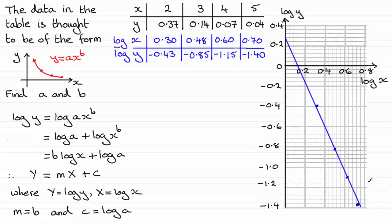And from this, we can get the intercept here with the log y axis. And reading from this graph, it seems to look like it's 0.26. So that means that our c value here, which is the equivalent of log a, is going to be equal to 0.26.